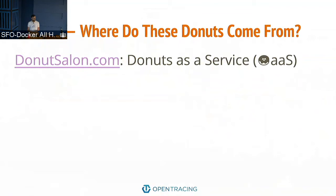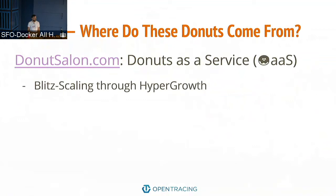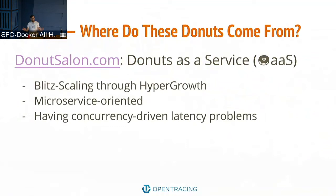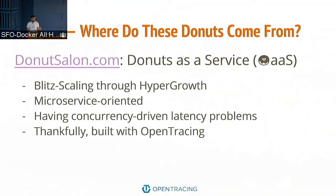DonutSalon is microservice-oriented from day one, and we're having some concurrency-driven latency problems — spoiler alert. Thankfully, it was built with OpenTracing, so I can maybe figure out what's happening. I'd like everyone here, if you want to participate, to load DonutSalon.com on your mobile device and order some donuts. It's a responsive design. I'm going to order a cinnamon donut, and it's already getting slow, which means you guys are doing your part.